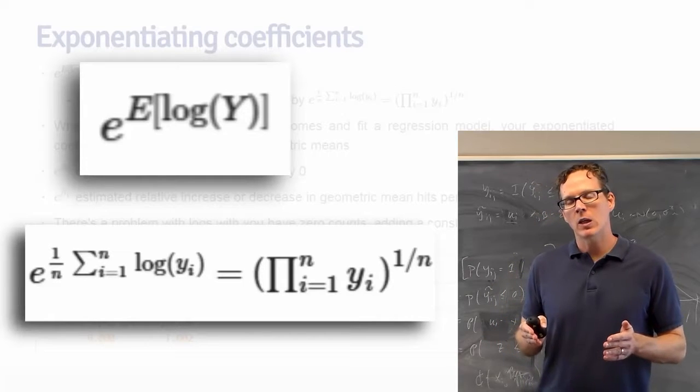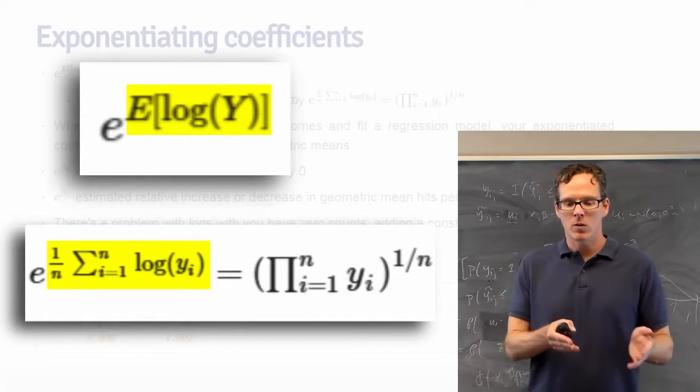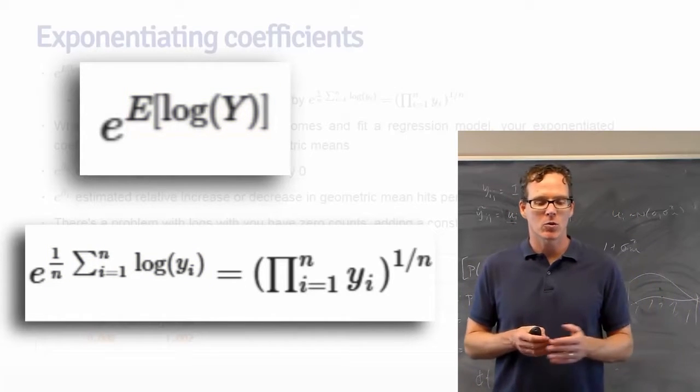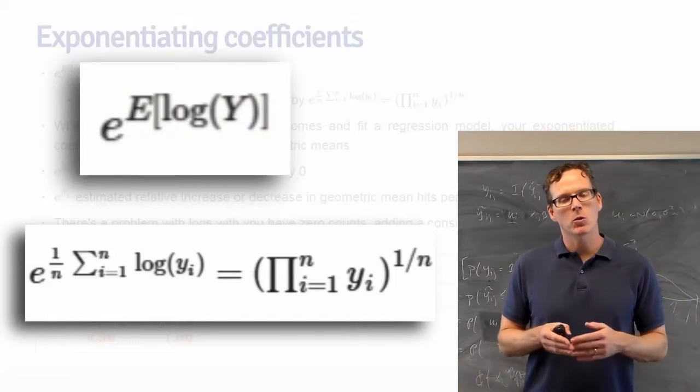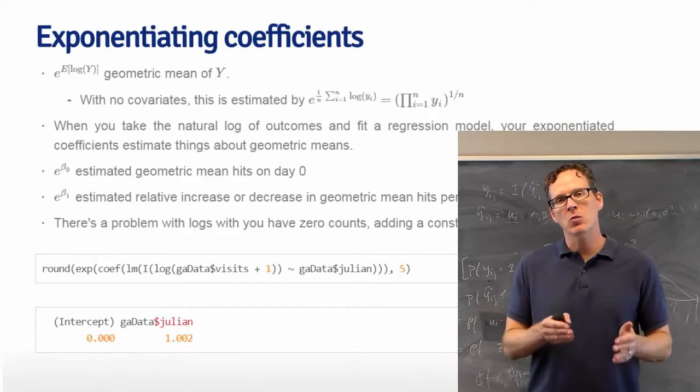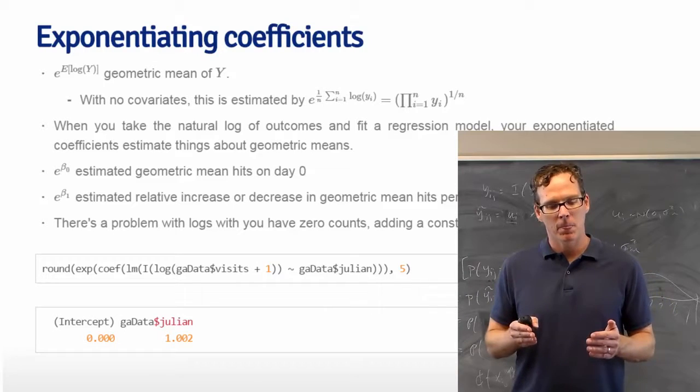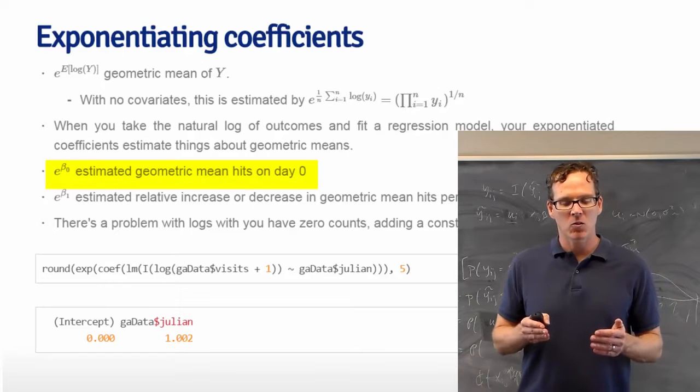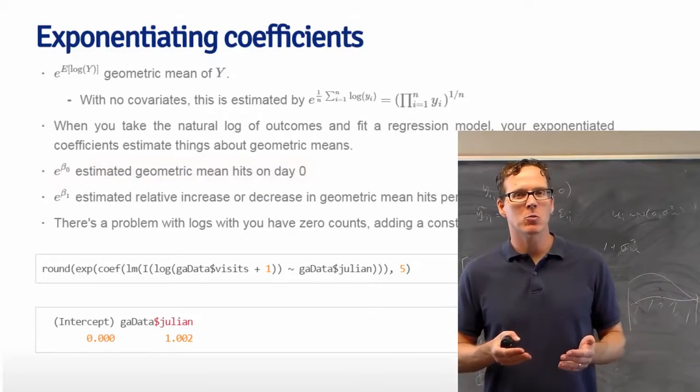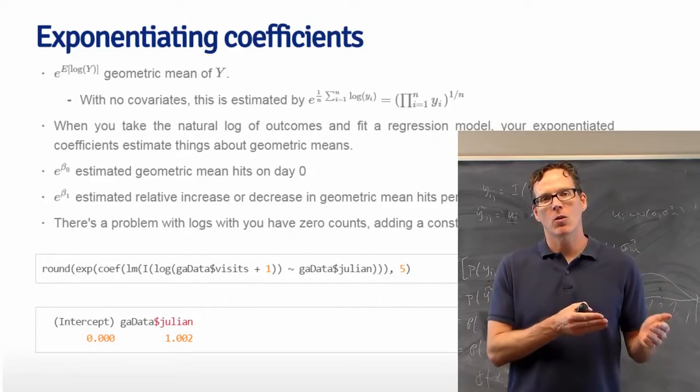We know that if we collect a lot more data in our sample, the arithmetic mean will converge to something. So the geometric mean is what this quantity, the product of the data raised to the 1 over n power, converges to. So what it turns out is when you take the natural log of the outcome in a linear regression, then your exponentiated coefficients are interpretable with respect to geometric means. For example, e to the beta_0 is the estimated geometric mean hits on day 0. And I should reiterate a point from earlier on in the class. This intercept doesn't mean that much because January 1, 1970 is not a day that we care about in terms of number of web hits.